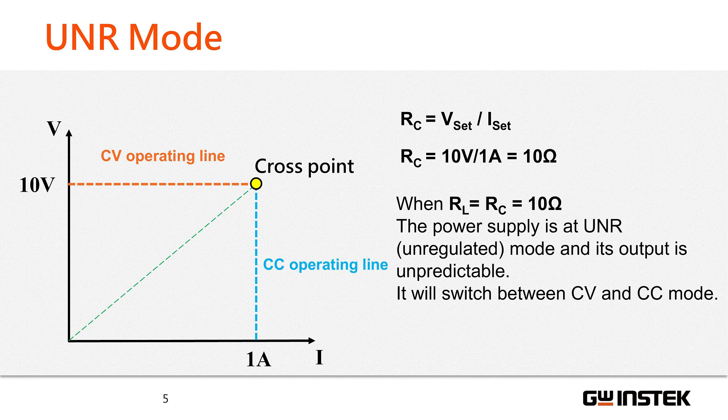There is a special case called the unregulated mode, which means the mode is unpredictable, either CV or CC mode. One reason to cause UNR mode is when the load resistance is equal to the critical resistance, causing the power supply to switch between CV and CC.